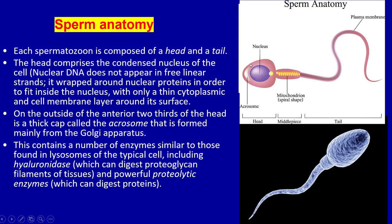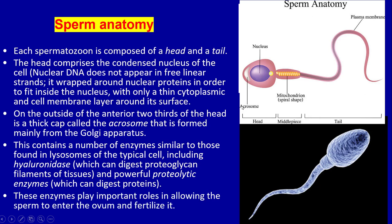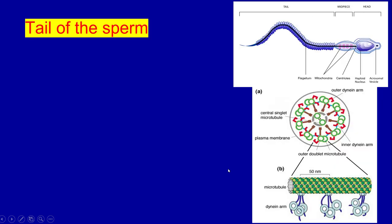On the outside of the anterior two-thirds of the head is a thick cap called the acrosome, which is formed mainly from the Golgi apparatus. The acrosome contains a number of enzymes similar to those found in lysosomes, including hyaluronidase, which can digest proteoglycan filaments of tissue, and powerful proteolytic enzymes, which can digest protein. These enzymes play an important role in allowing the sperm to enter the ovum and fertilize it.